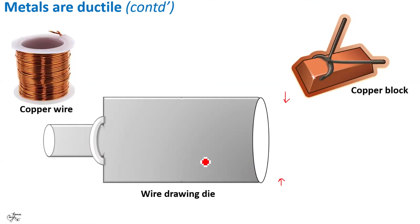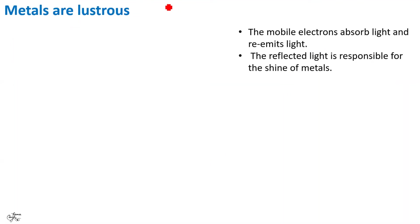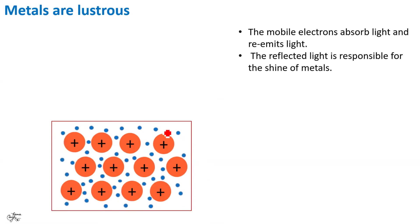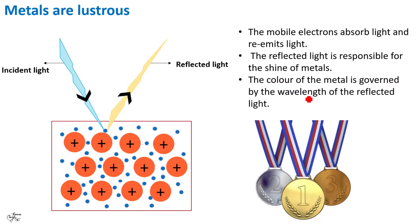Coming to the explanation of their last property, metals are lustrous. That is, they have a shining surface. The delocalized or mobile electrons readily absorb and re-emit visible frequency of photons. Right now, you simply need to understand that mobile electrons absorb light and re-emits light. This re-emission or bouncing off or reflection of light is responsible for metallic luster. Dear students, remember that the color of the metal is decided by the wavelength of the reflected light.